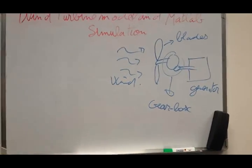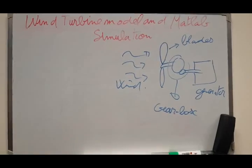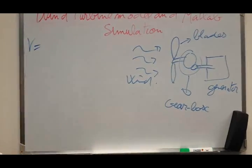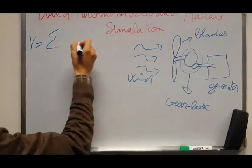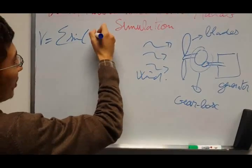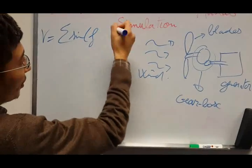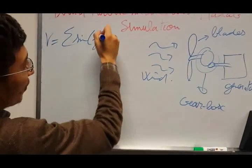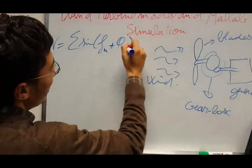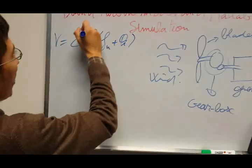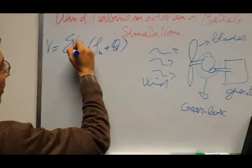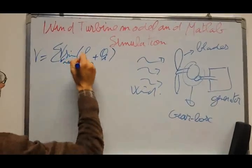The wind source has a stochastic phenomenon. For this reason, the wind speed can be modeled by the sum of sinusoidal components with different frequencies and initial phases. So here we have a mean wind speed.